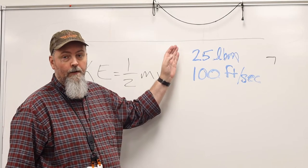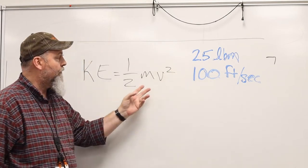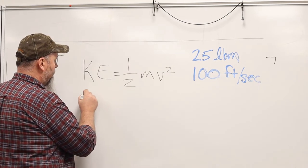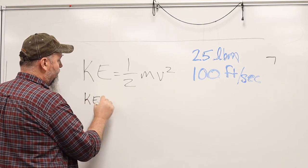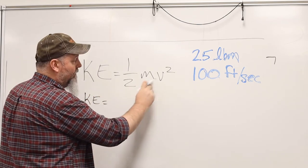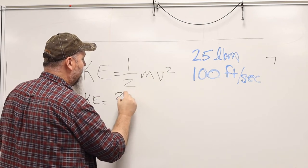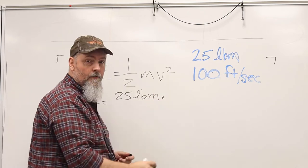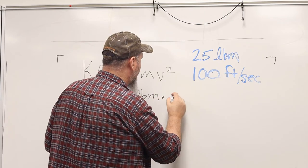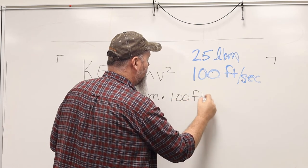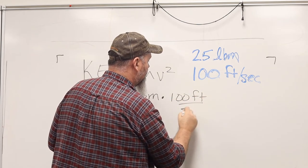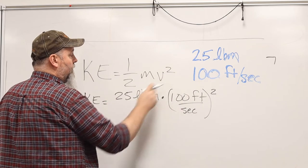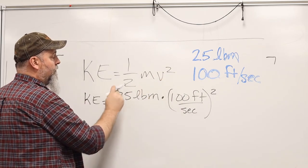Now we just have to plug these two values into their respective terms on our equation. Mass, 25 pounds mass. Velocity squared. Divided by 2.